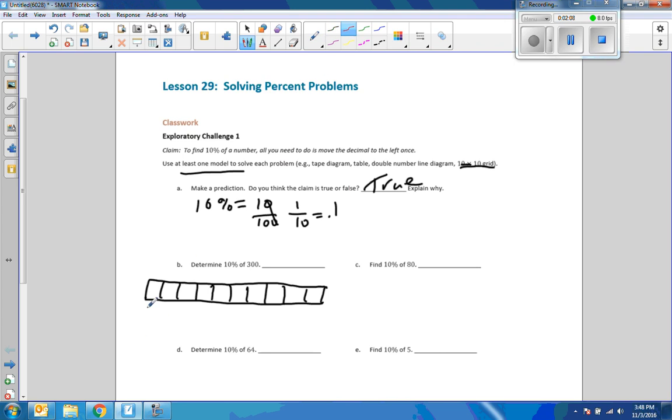So there's a tape diagram that has 10 squares that are equal size, so therefore have equal value. All right, so if this whole thing is 100%, each piece is 10%. If some of you are still struggling with tape diagrams, the value in every square is equivalent. 30, 30, 30. All of them are the same, 30.